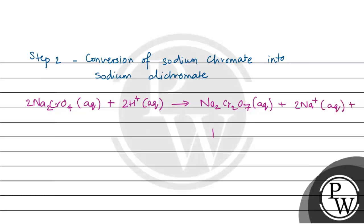Plus H2O in liquid form. The third step is the conversion of sodium dichromate to potassium dichromate.